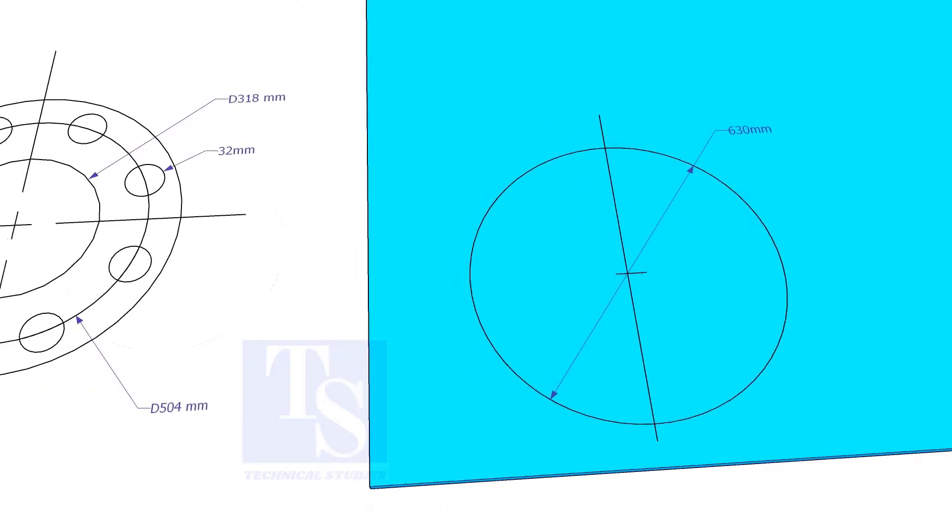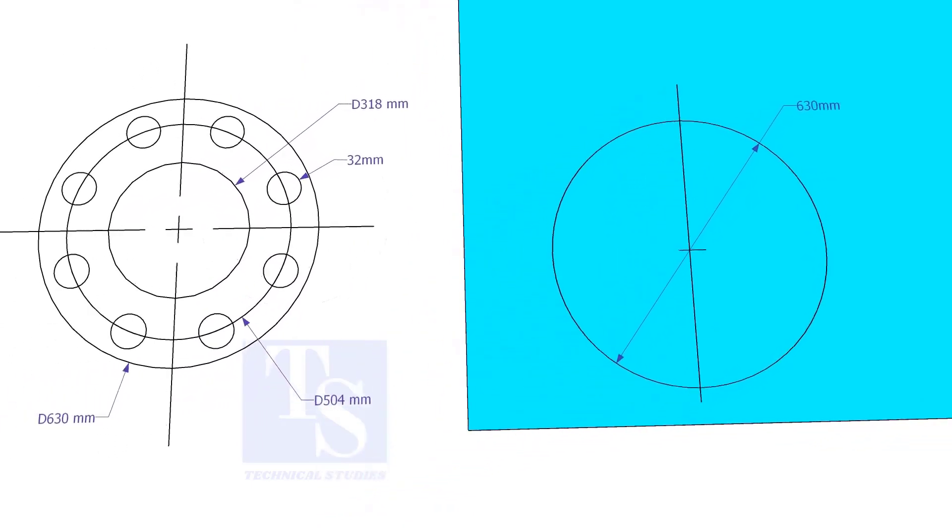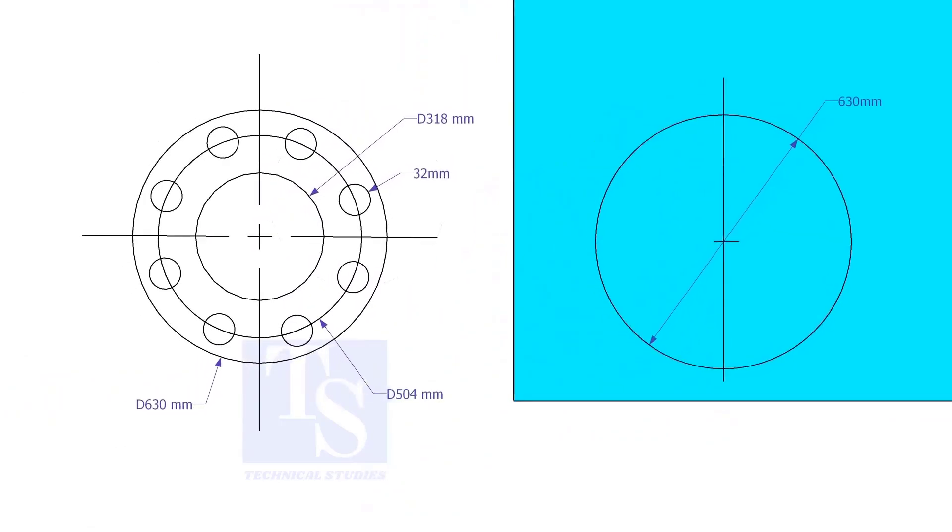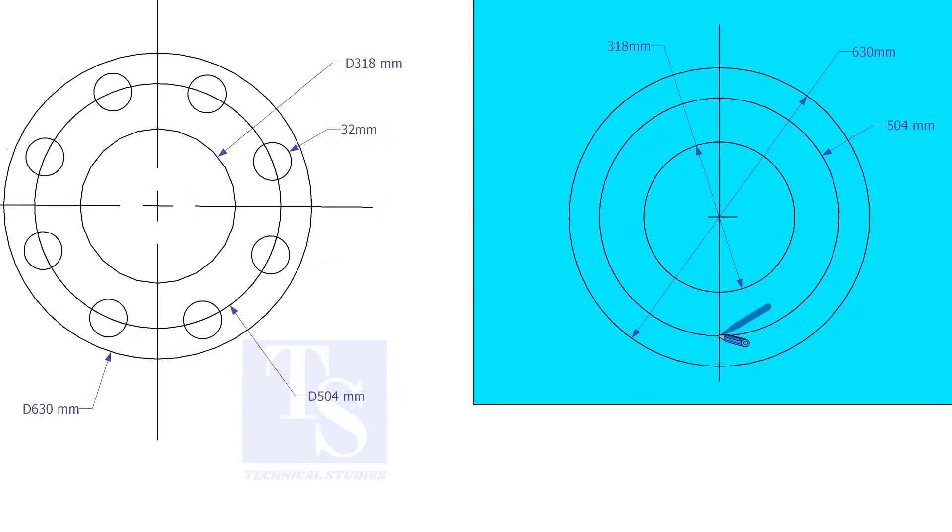Draw the OD and the ID circles. Draw the PCD. Punch mark where the PCD circle cuts the center line.